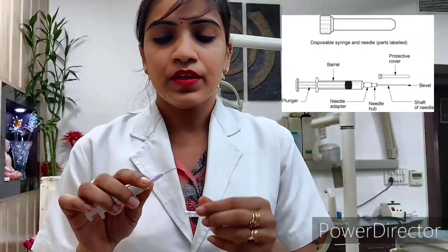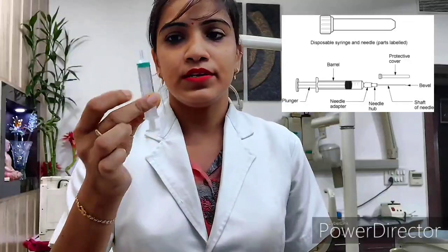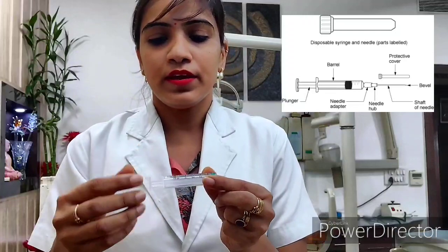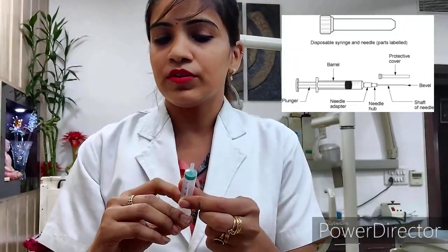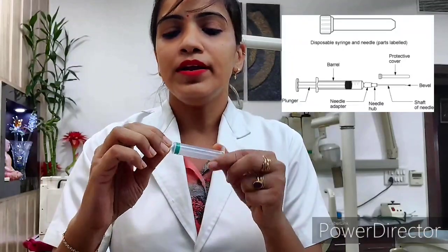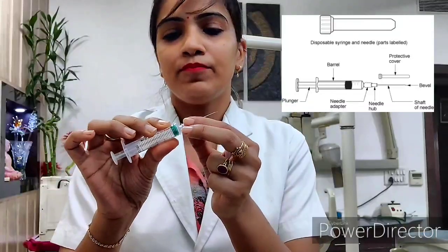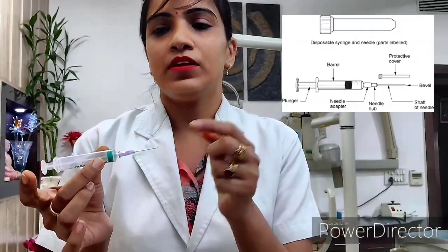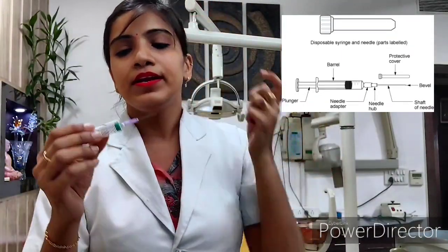This part is called a protective cover. This is a needle, and this is the syringe. This part is called the barrel. And this is the plunger, with which we fill the syringe or discard it. This is your needle adapter, and this is your needle hub. This is the shaft of the needle. And this is the bevel. So these are our needle and syringe parts.